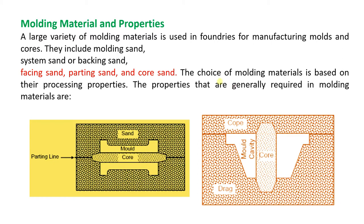As you can see in the figures, there is something called a core, and the mold is nothing but the shape which we want. On the outer side we have sand, and there is a partition line. Remember these names: the bottom side box is called drag, the top side box is cope, and then we have the molding cavity and the core.